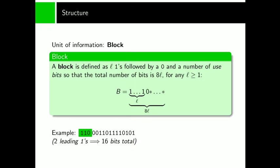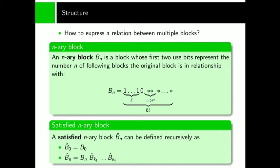Now we have solved the fundamental problem of structuring the bits, but how can we represent the block's relation to each other, like two nouns and a verb forming a sentence together with subject, verb and object? To accomplish this, we define an n-ary block as a block whose first two use bits represent the number n of following blocks the n-ary block is in relationship with.